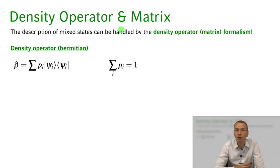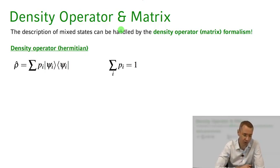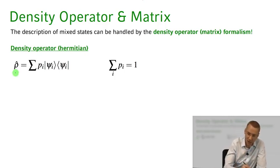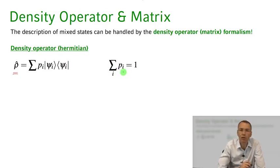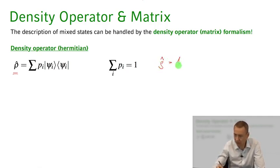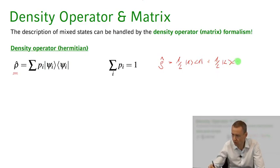Let me remind you of its features — maybe some of you have encountered it already in your quantum mechanics course. Imagine we have a source spitting out particles in state psi_i with probability p_i. Then the density operator rho is defined as the sum of the projectors onto state psi_i weighted by probability p_i, and the sum of all those probabilities must add up to one. In our situation of 50% atoms in state one and 50% in state two, the density operator is one-half times the projector onto state one plus one-half times the projector onto state two.